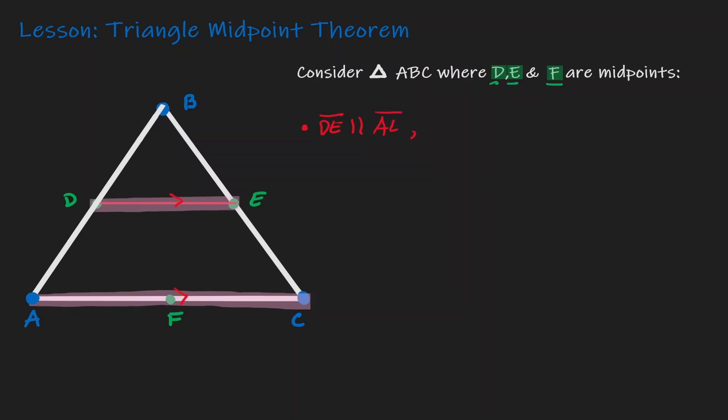And in addition to that, DE is half the length of its opposite side, which is AC. So what would happen if we decide to connect another two midpoints?